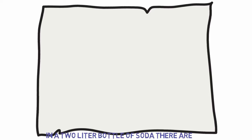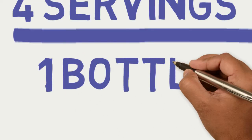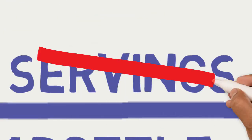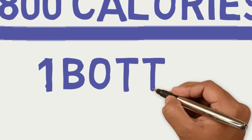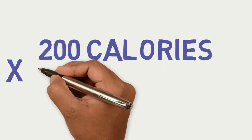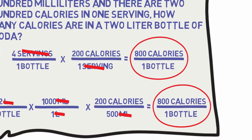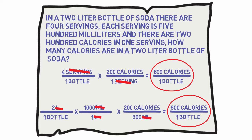In a two-liter bottle of soda, there are four servings. Each serving is 500 milliliters, and there are 200 calories in one serving. How many calories are in a two-liter bottle of soda? You can easily multiply four servings by 200 calories, but using unit analysis we can set the problem up with units. There is more than one correct method: either will yield 800 calories per bottle. The most efficient technique is to multiply four servings per bottle by 200 calories per serving. You can also multiply 2 liters per bottle by 1,000 milliliters per liter by 200 calories per 500 milliliters.